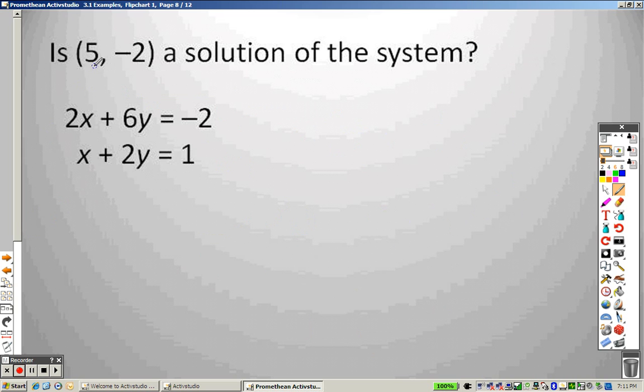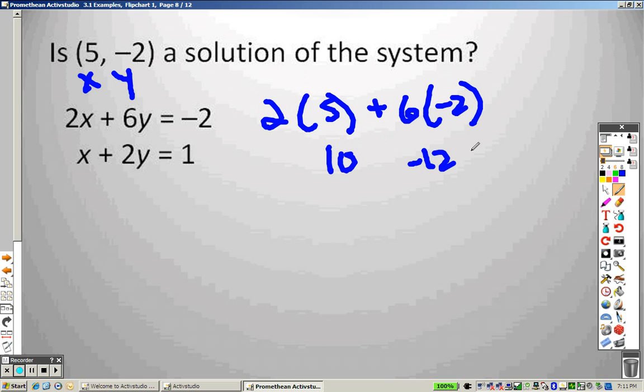Does this work? Here's how you can tell if it works. You plug it in. This is x. This is y. So 2 times 5 plus 6 times negative 2. I get a 10 and a negative 12, which equals negative 2. Guess what it works?